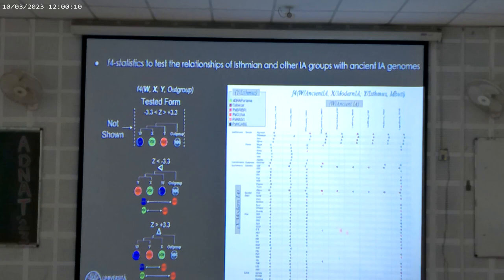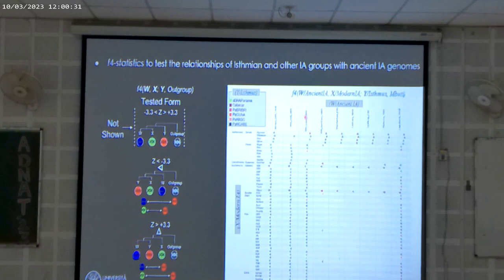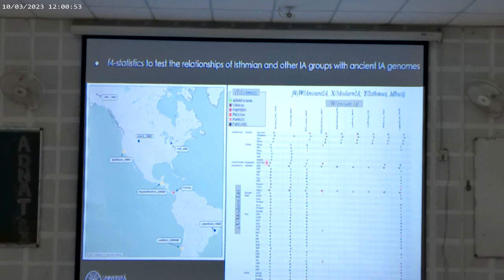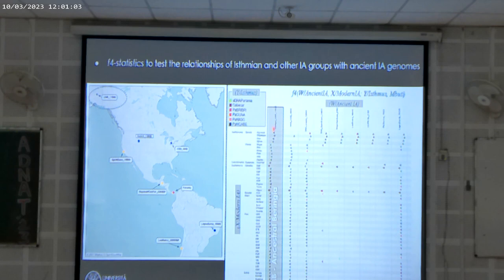If you don't see any signal, it means that our Panamanians are equally related to these modern groups and to these ancient groups. While if you see a triangle pointing to one side or the other, it means they are more closely related to the population on that side, and the other side is an outgroup. Our Panamanians are more related to other modern groups — the triangles point here — and ancestral Beringia is the source. It is also the case for Northern Native American, because they split from ancestral Beringia.